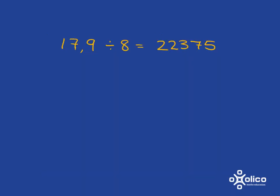Try this one for fun. I did this division: 17,9 divided by 8, and I get an answer but I forgot to put the comma in. Think about it — try and figure out where the comma goes, and then we'll go over it. Pause the video and try now.